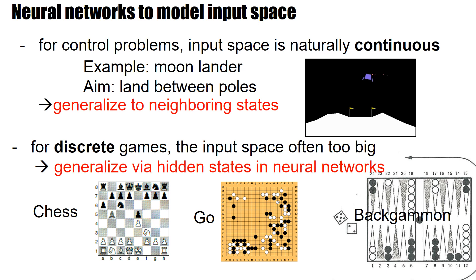To summarize: we want to use neural networks to model the transformation from the input space to the output. For control problems in continuous space, the input space is naturally continuous — for example, a moon lander that has to land between the poles, where a little bit to the left or right makes sense and neighborhoods are well defined. The idea is to choose a representation that makes generalization to neighboring states easy. In discrete games we don't have this natural continuous space; nevertheless, the combinatorial space is often too big to be fully represented. We then use deep neural networks with a few hidden layers to generalize across similar positions, so the hidden states create a neighborhood relation.